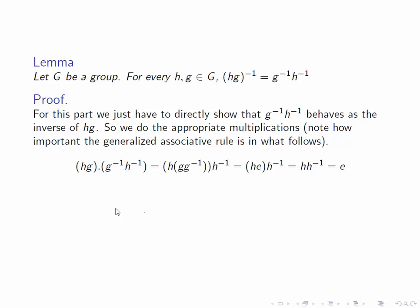So let's do this multiplication. We take HG and multiply it by G inverse H inverse. By our generalized associativity, we can rewrite this in any order we want. So we write it in the order shown here. The G and G inverse then collapse to E, H times E collapses to H, and H and H inverse collapse down to E. So we get that HG times G inverse H inverse is equal to E.